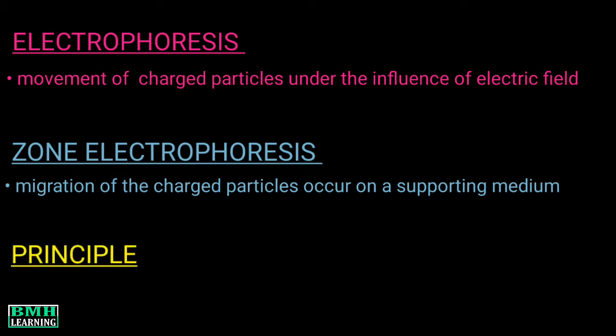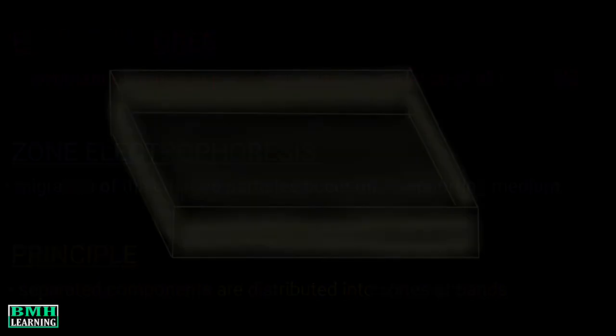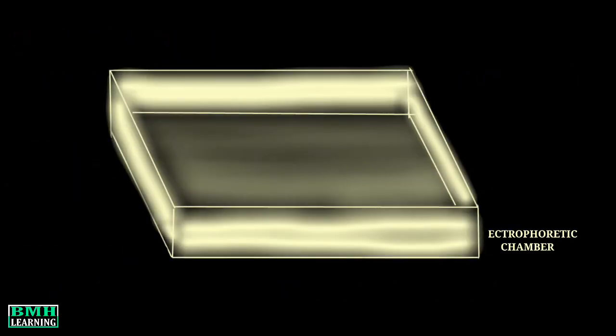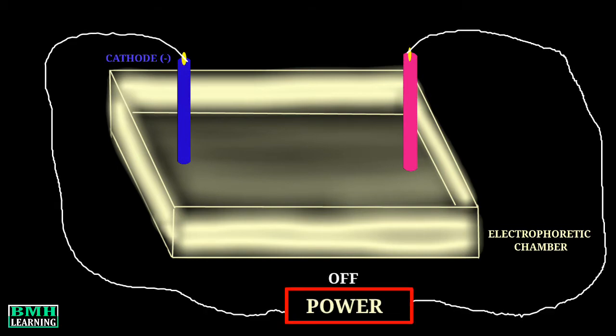To understand this, let's do it diagrammatically. To carry out zone electrophoresis procedure, the first thing we need is an electrophoretic chamber in which separation of particles would take place. Second thing is electrodes: negatively charged cathode and positively charged anode. Then we have a supporting or stabilizing media in this chamber.